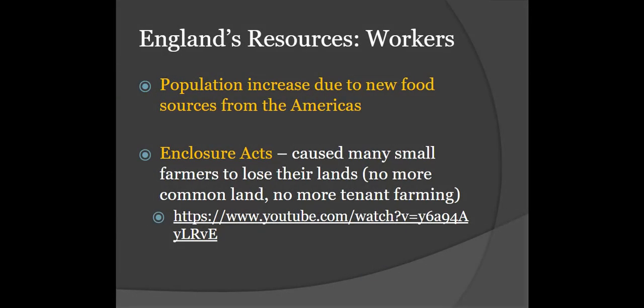Lastly, you need a workforce. Due to the food coming into England from the American colonies and then the Enclosure Acts — which kicked most of the farmers off the farms — there's a ready-made workforce. We see a huge population increase in rural England as more families saw more children survive into adulthood. The Enclosure Acts took open communal land, fenced it off, and made it impossible for farmers to freely access that land, leading to a huge migration of workers into cities. Those workers need jobs, and it turns out they can get jobs in factories being built with all this iron and coal.